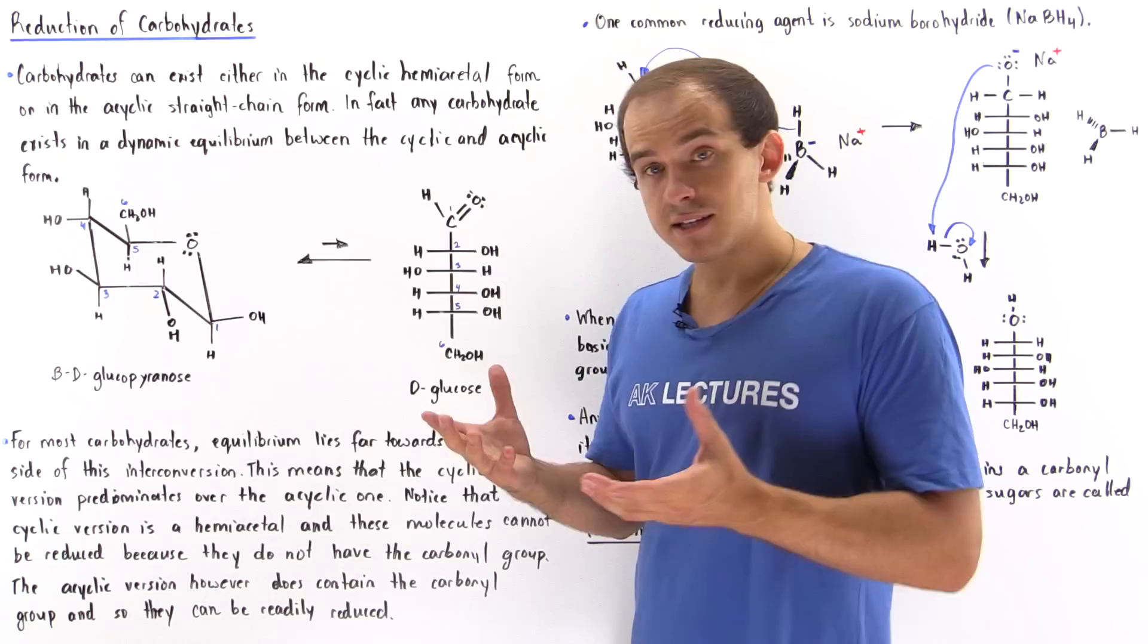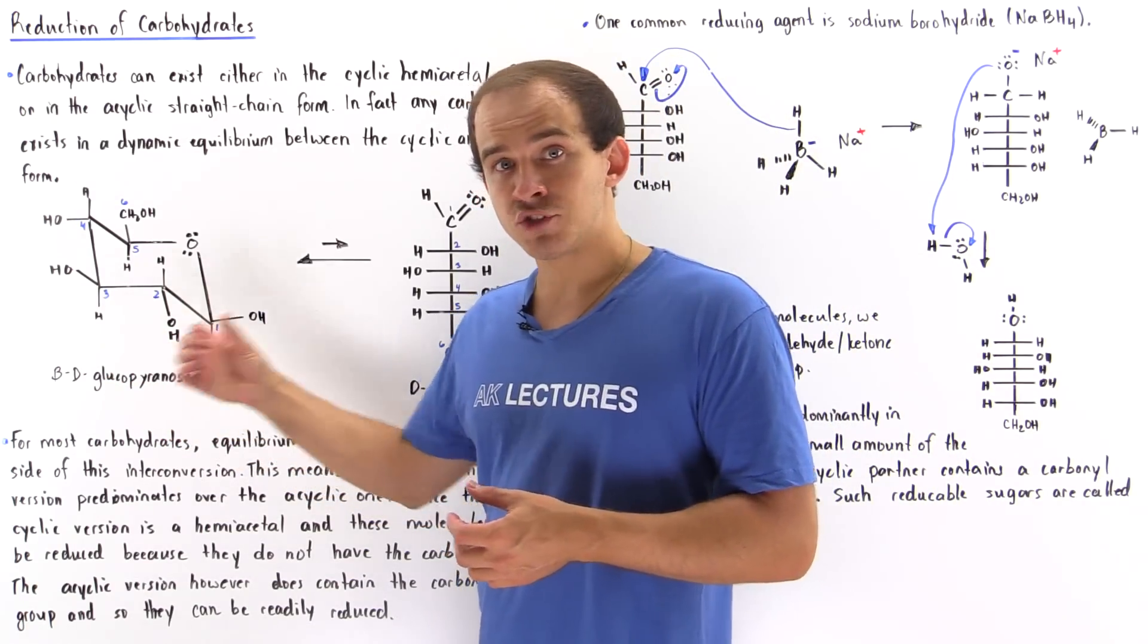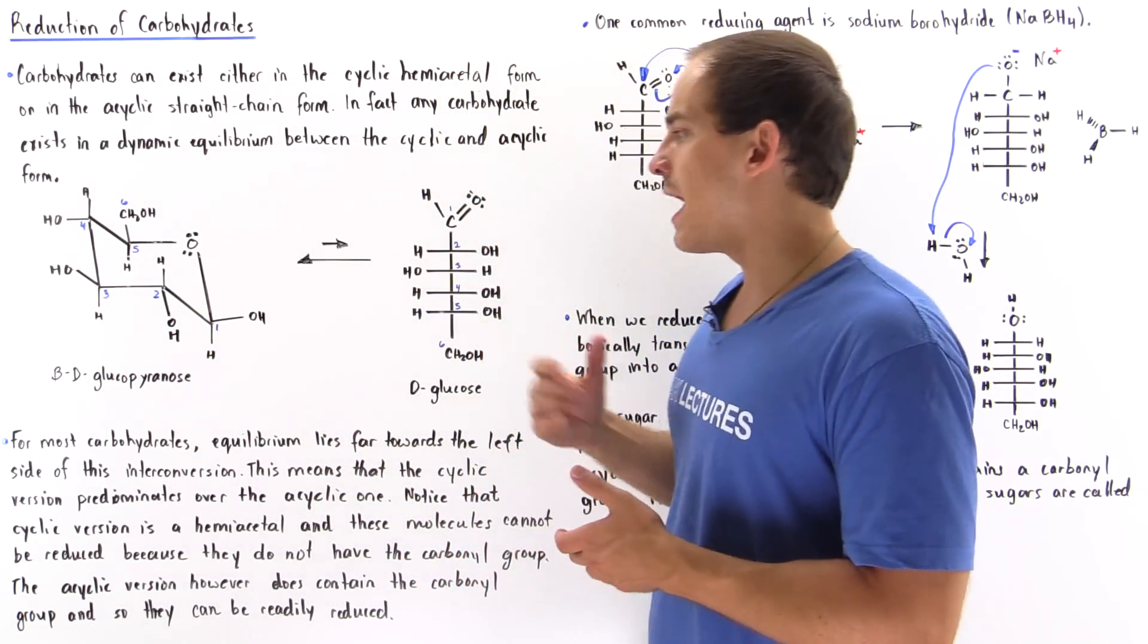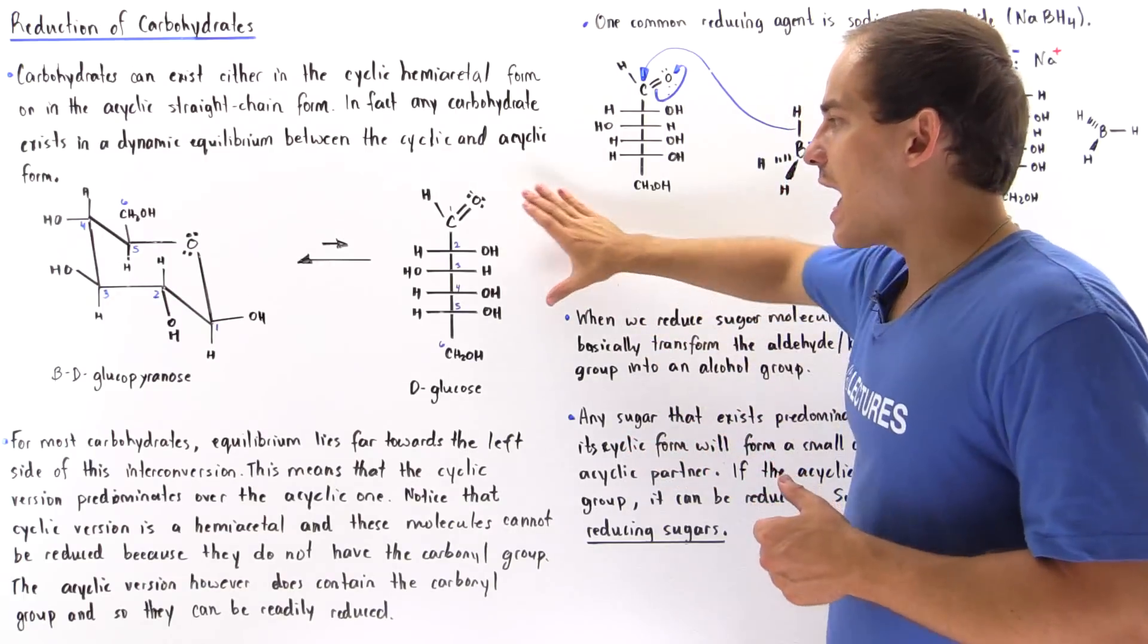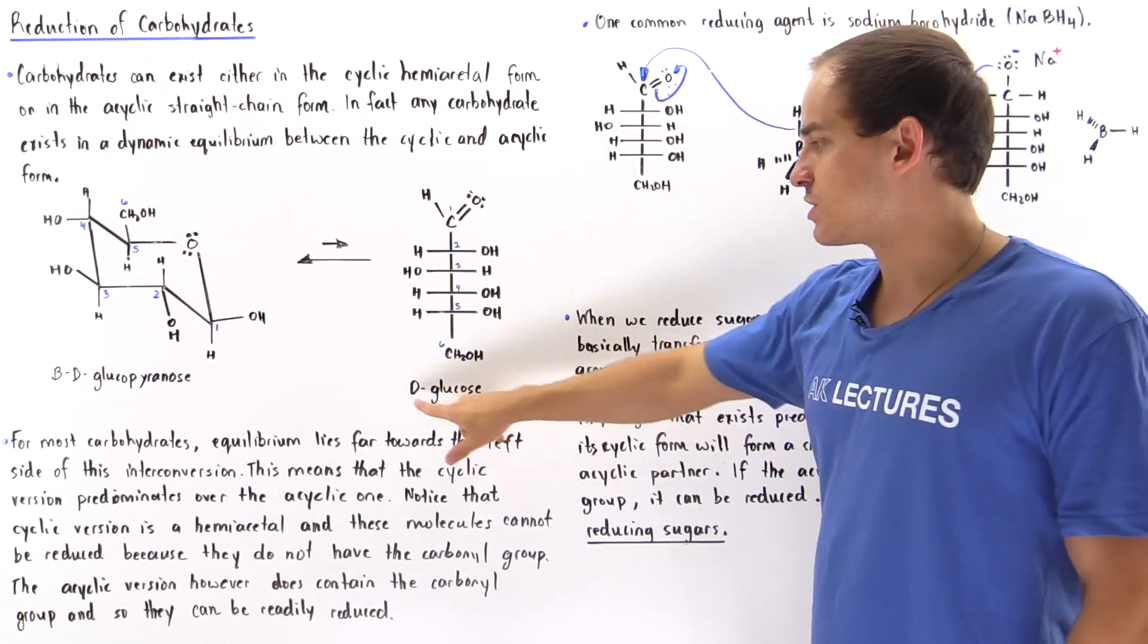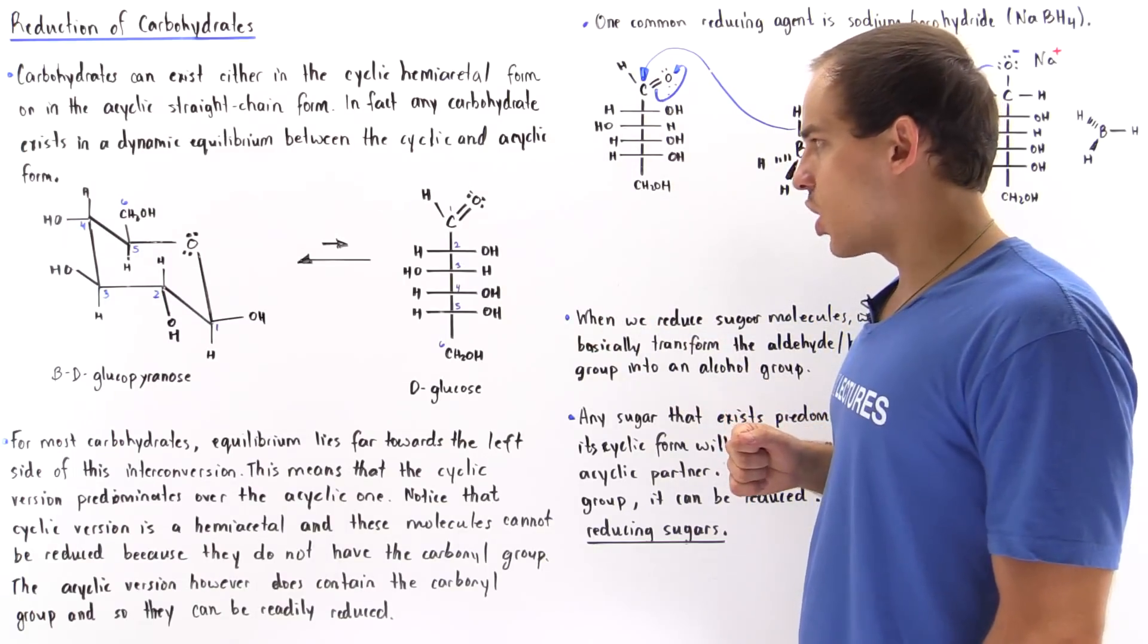Glucose exists in the cyclic form, and we have two anomers: the alpha and beta D-glucopyranose, as well as our acyclic form, our open straight chain glucose molecule simply known as D-glucose.